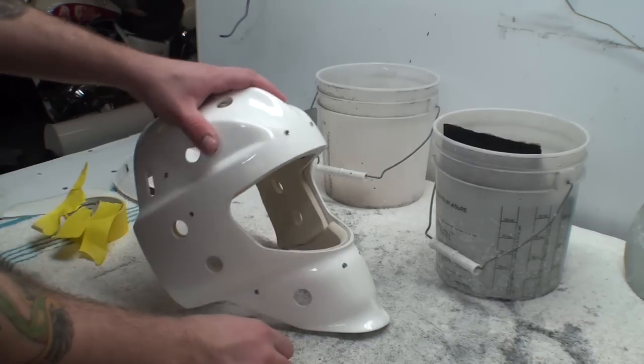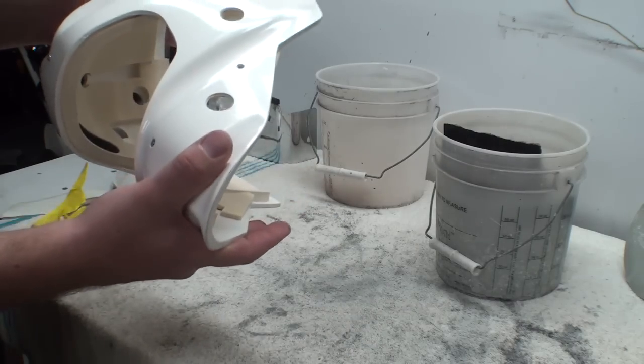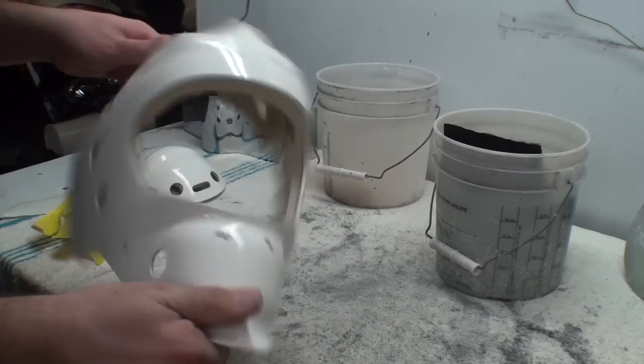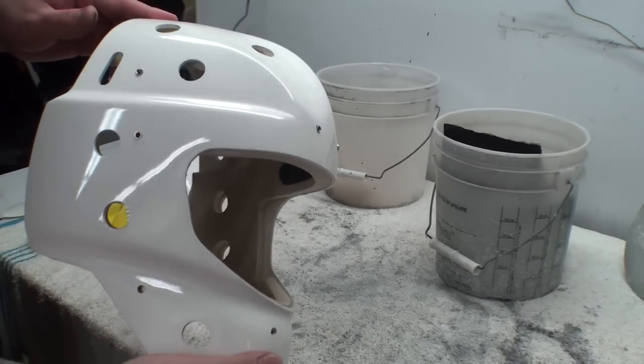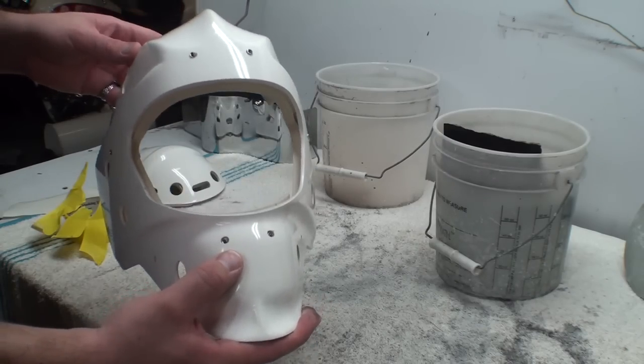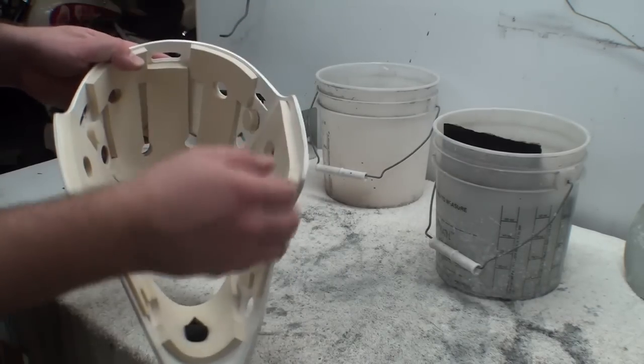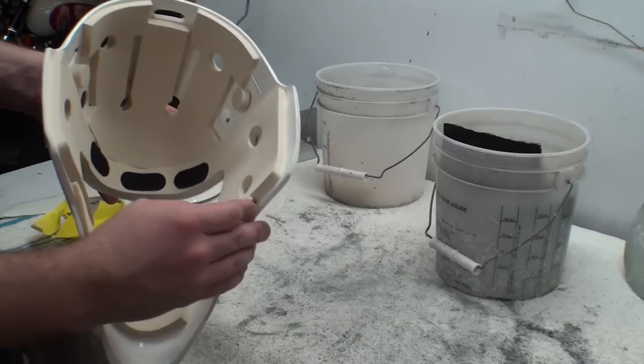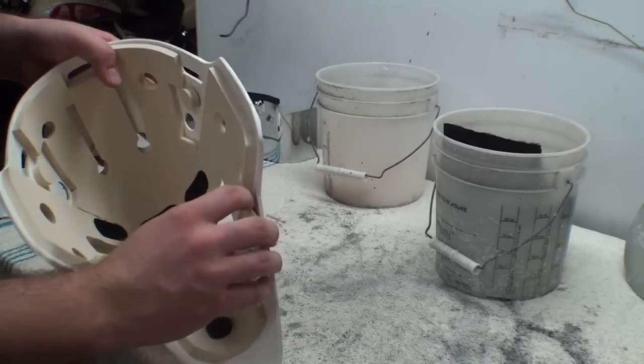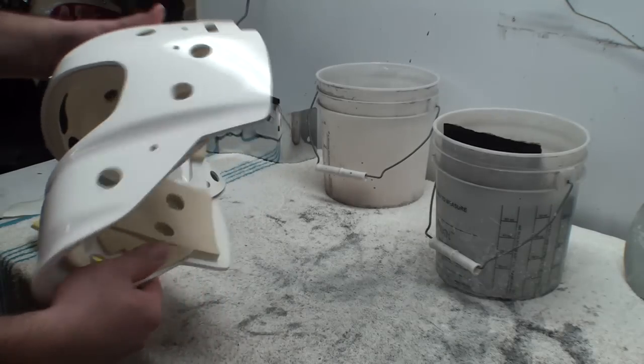Pretty much before you start any goalie mask, this is for goaltender Johan Backlund. It's a Bauer Pro mask and what we're going to be doing today is taping it out for prep, taping all the padding, removing any padding that we can get to that is just lightly glued in.